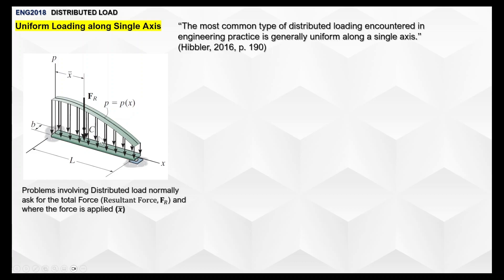The force exerted at one point differs from another due to the shape of the object and the load. If it's uniform — like a brick with uniform density and uniform shape — it generates a uniformly distributed load. Not all objects in real life are like that, but we try to make them so. Problems involving distributed load normally ask for the total resultant force and where the force is applied, which we call the location where the resultant force passes through — the centroid, labeled as x-bar.